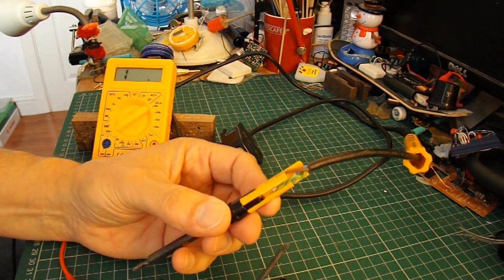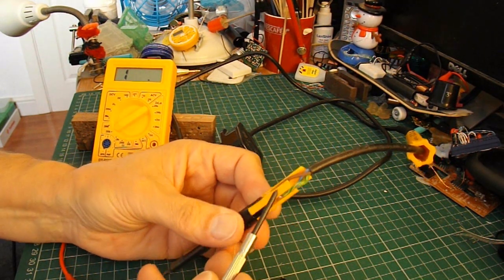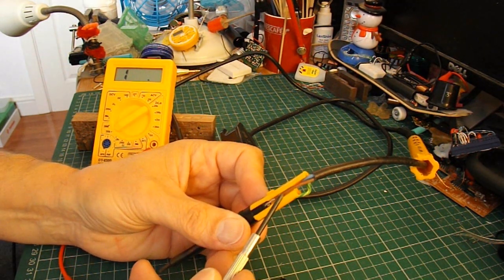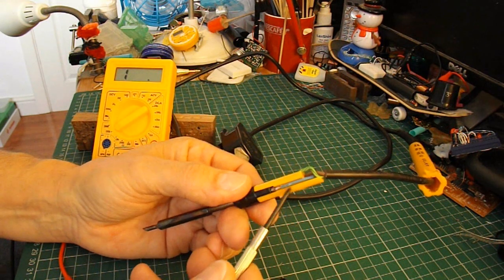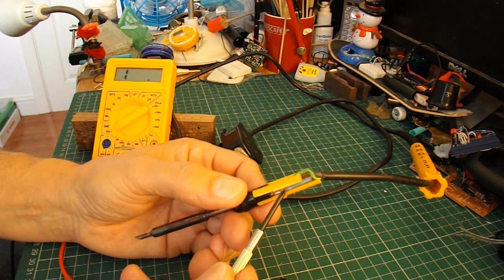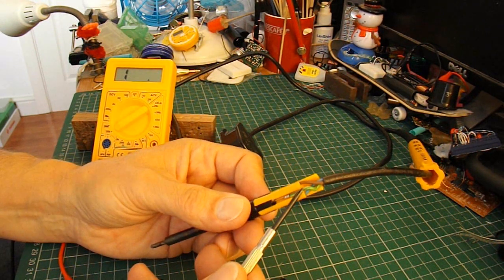Now we can see the three wires. Brown is live, blue is neutral, and the yellow and green is the earth.